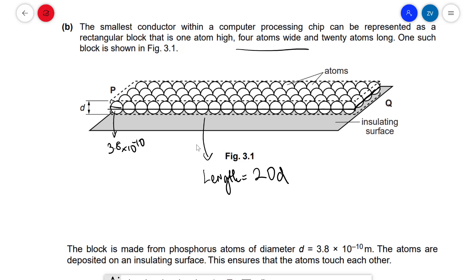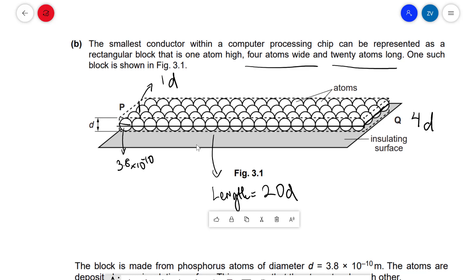By the way, we don't need to count them individually, it says it over here in the question. So 4 atoms wide means this side here will be equal to 4d. Now the height itself will be equal to just 1 diameter, we can write this as 1d.